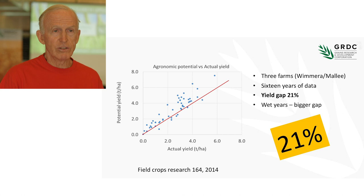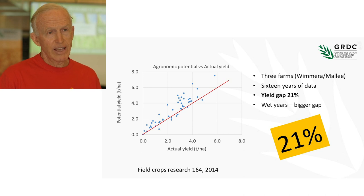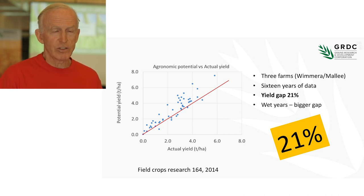It's important that we close the yield gap because it represents lost production — we're wasting water, not growing crop, and farmers are losing money by not optimising their production. This GIDC-funded project has been running from 2015 to 2018.